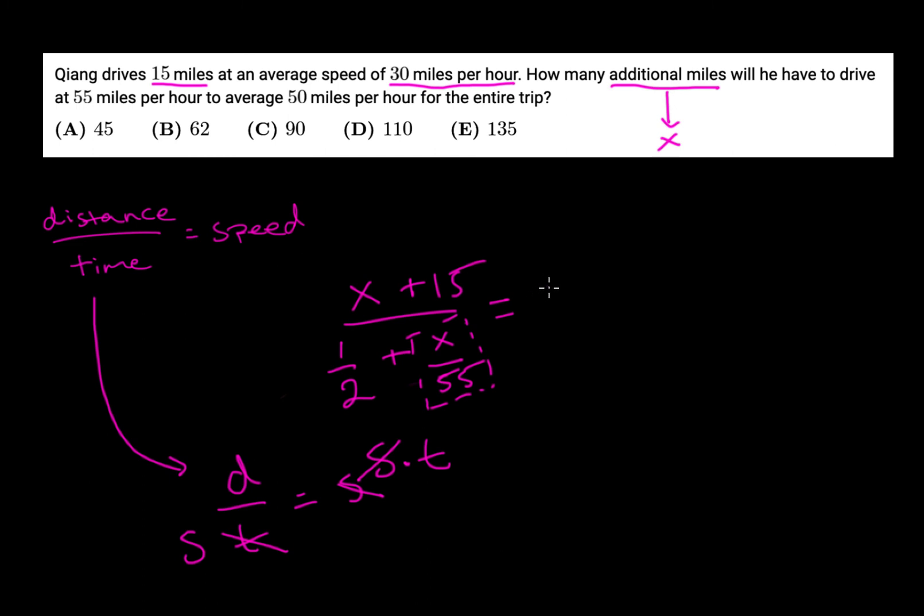And so on the other side of this equation we're going to put 50, because that is our target speed. Distance by time equals speed, and we have to average 50 miles per hour.